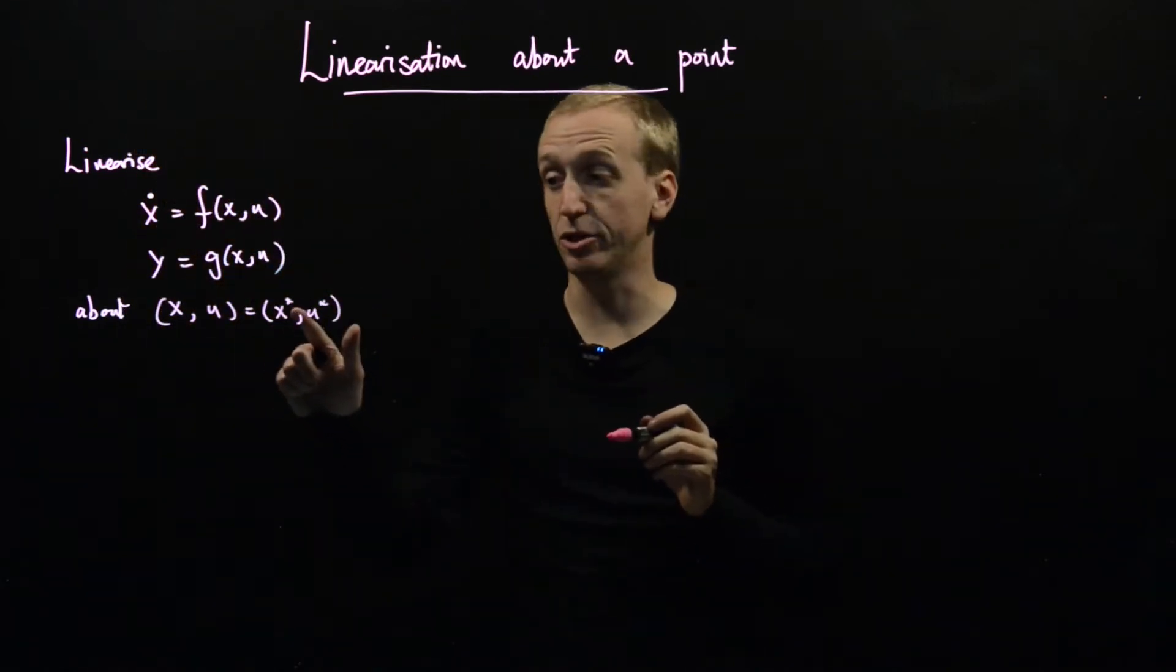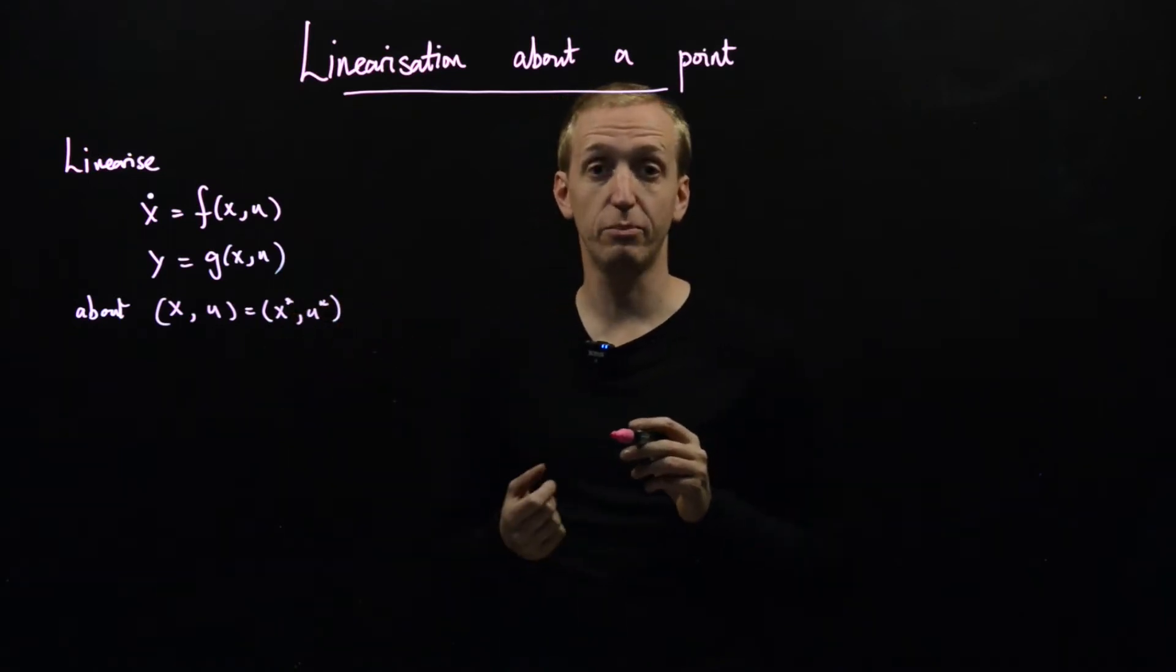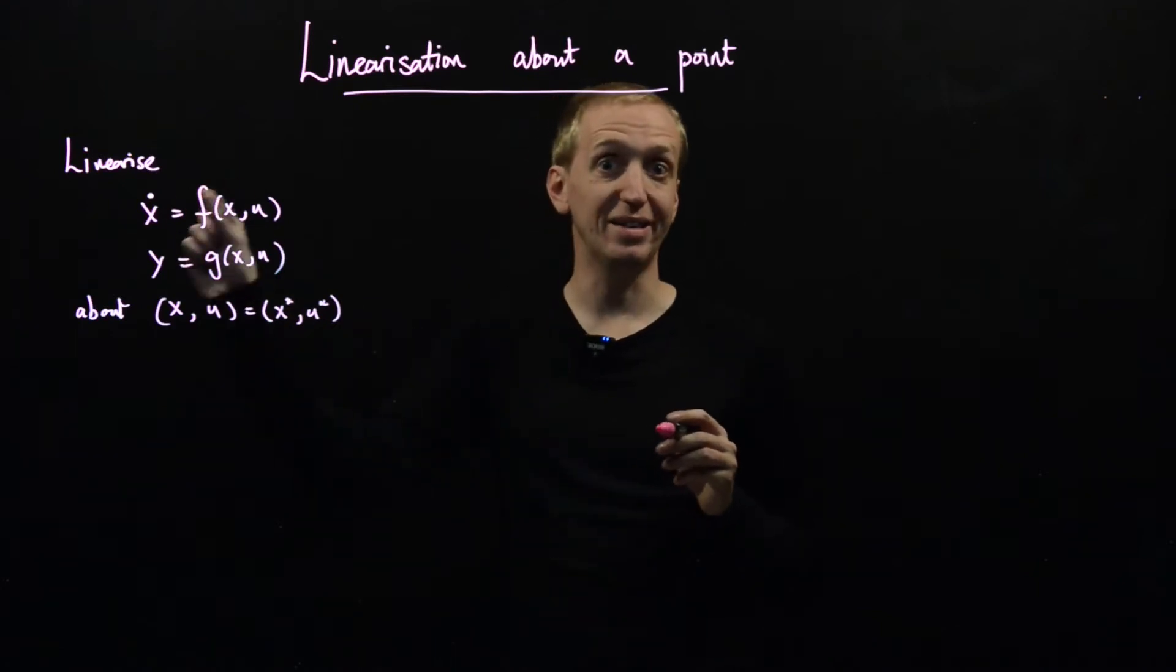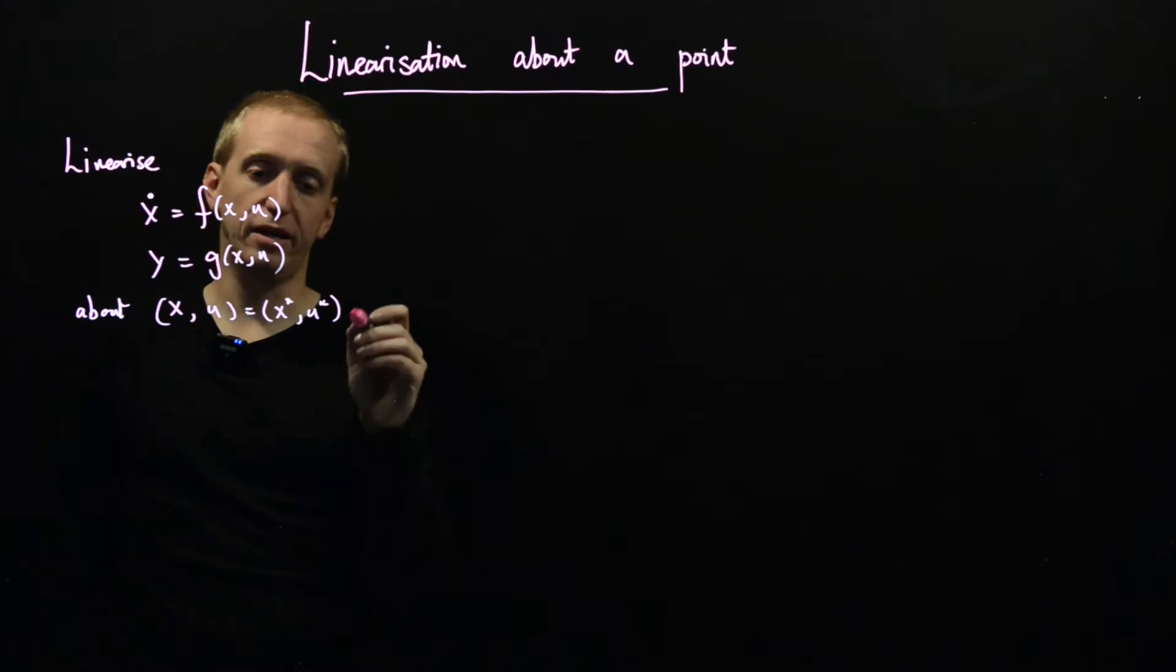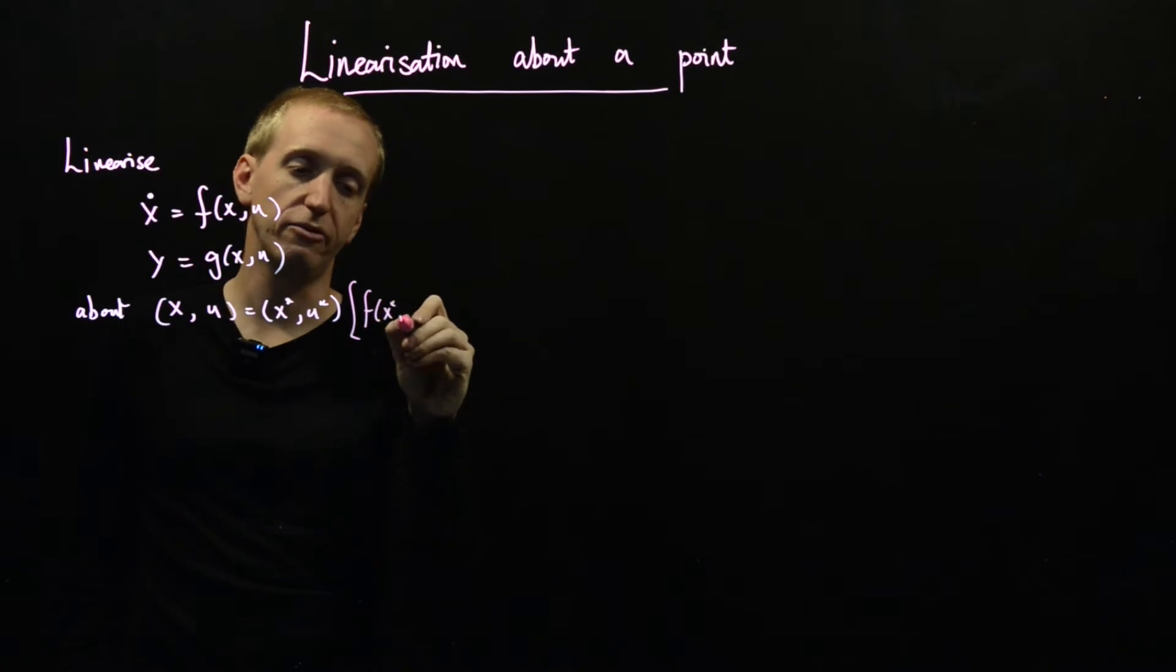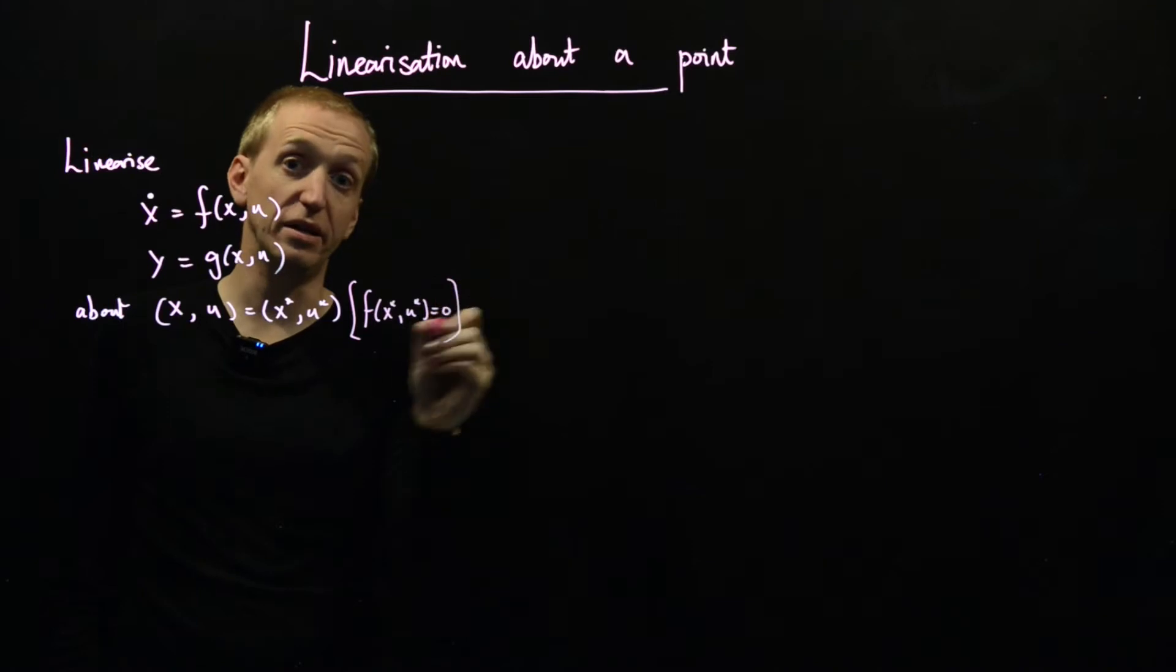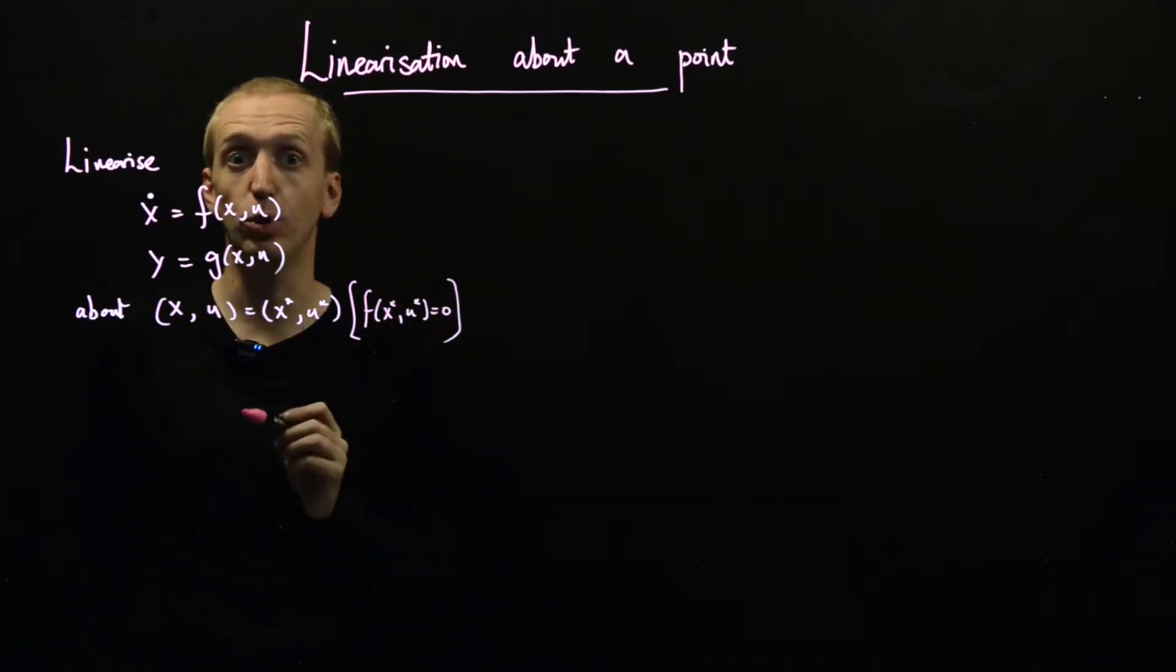And so these are just vectors of numbers, x and u. What must these vectors of numbers satisfy in order for this to be called an equilibrium point? Well we just need that x dot is equal to zero. So about this point here, we have f of x star u star which is equal to zero. So this is our condition for x star and u star to be an equilibrium point.